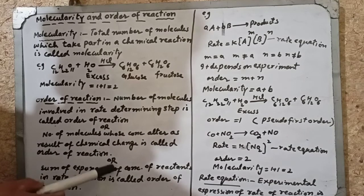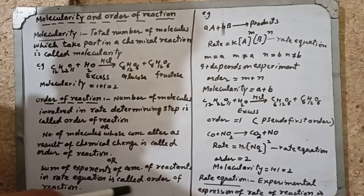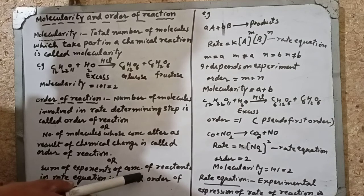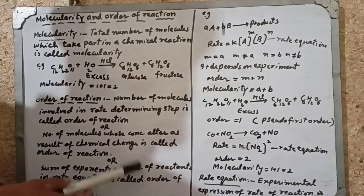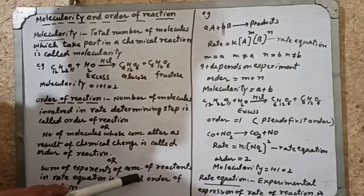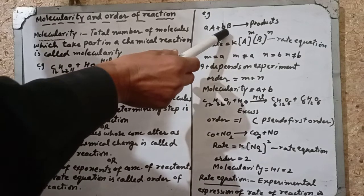The sum of exponents of concentration of reactants in the rate equation is called order of reaction. The rate equation is an expression developed experimentally after performing experiments — we will discuss this later. So: sum of exponents of concentration of reactants in the rate equation is called order of reaction.